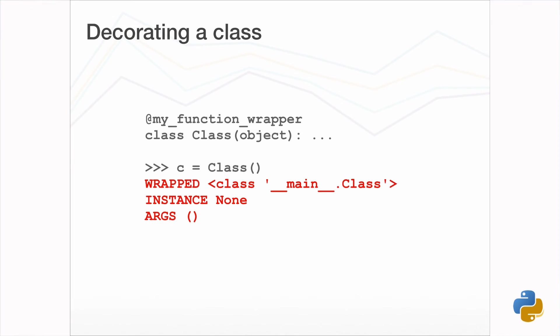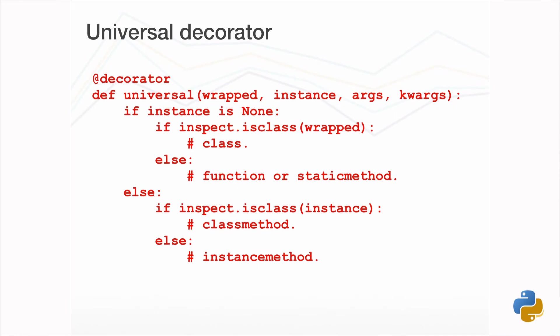We have one more situation to consider: where we want to decorate a class. In this case the instance is still None, so we cannot distinguish it from a normal function. If we also look at the wrapped function we will see that it is a class type, whereas it would be a function in the normal case. This works out because we can look at the type of what is being wrapped. We now have the ability to create a universal decorator — one that can determine what it is wrapping — doing away with the need to create separate decorators for functions and instance methods that would otherwise do the same thing.